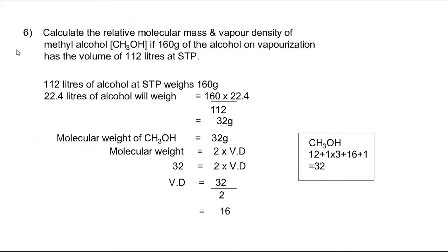Problem 6: Calculate the relative molecular mass and vapor density of methyl alcohol (CH₃OH) if 160 grams of alcohol on vaporization has a volume of 112 liters at STP. So 112 liters weighs 160 grams. Therefore 22.4 liters (1 mole) weighs 160 × 22.4 / 112 = 32 grams. Molecular weight of CH₃OH = 32 grams. Vapor density = molecular weight / 2 = 32 / 2 = 16.